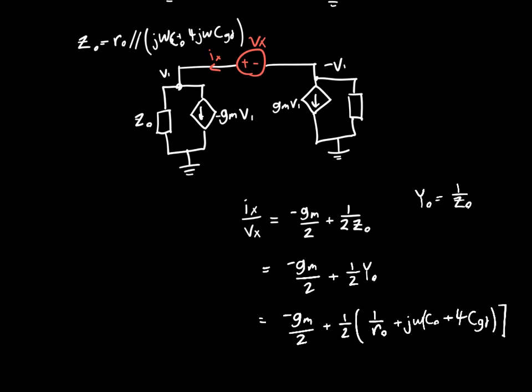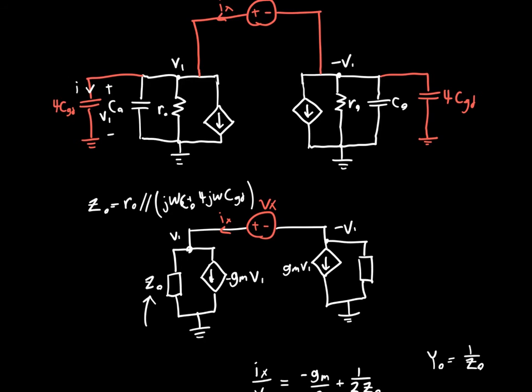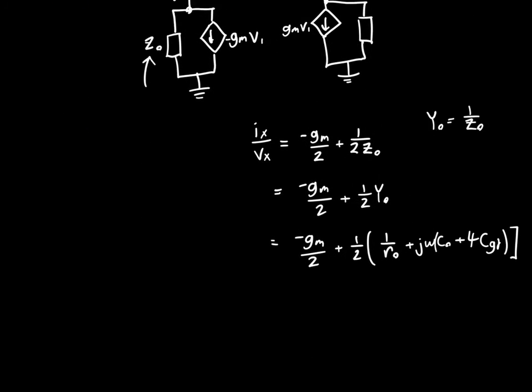And if you have trouble following along with the math, just remember Z0, we got it from this parallel combination of 4CGD, CO, and R0. And now I'm just expanding it. So I'm undoing the cheating that I did to make the circuit much easier to analyze. And now if we separate this in terms of its real and imaginary parts, we get minus GM over 2 times 1 minus 1 over GMRO.